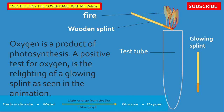Oxygen is a product of photosynthesis. A positive test for oxygen is the relighting of a glowing splint, as seen in the animation. If you look at the bottom of the screen, you will see the equation for photosynthesis — proof that oxygen is given off. Here, from the test tube, you can see the flame as the oxygen relights the glowing splint.